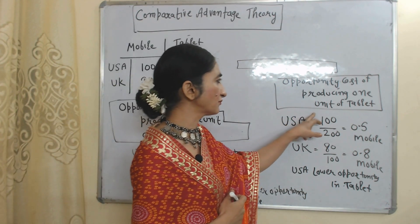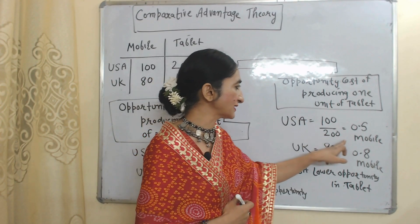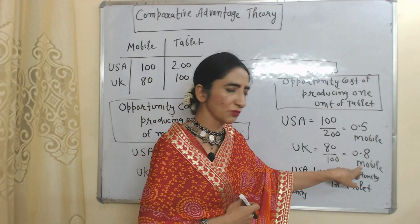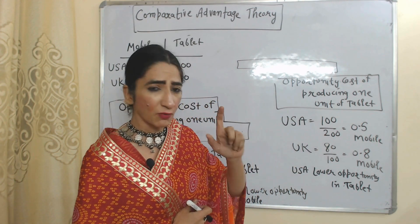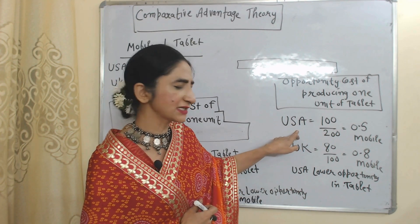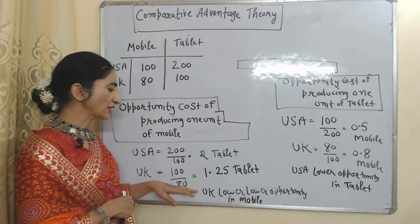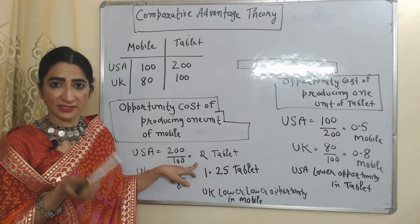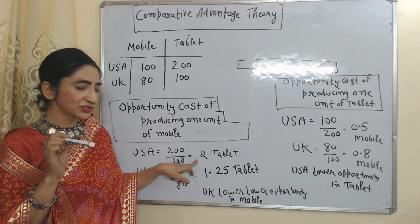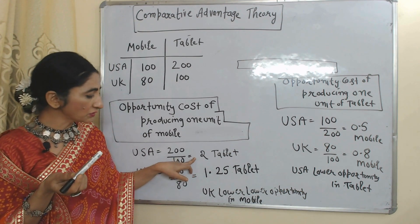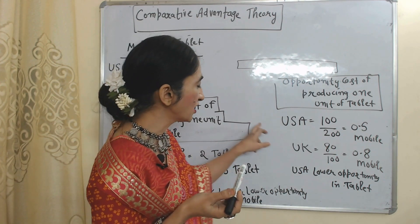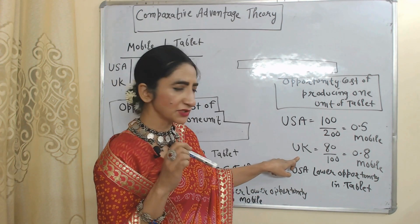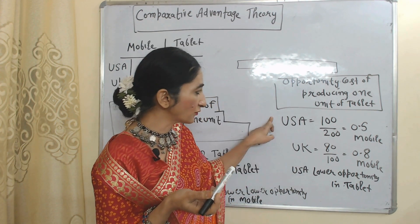Now we will see opportunity cost of producing one unit of tablet. In order to produce one tablet, USA has to sacrifice 0.5 mobile. In order to produce one tablet, UK has to sacrifice 0.8 mobile. So the opportunity cost of producing one tablet is less in the USA. That's why USA should increase production and export of tablet. Opportunity cost of producing mobile is lower in UK but higher in USA, so USA should reduce production of mobile and import mobile from UK. Similarly, opportunity cost of producing tablet is less in USA but higher in UK, so UK should reduce production of tablet and import tablet from USA.